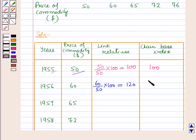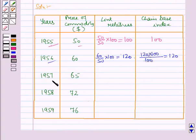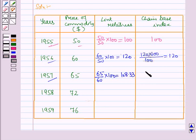The chain-based index for 1956 equals the link relative of the current year (120) multiplied by the chain index of the previous year (100), all divided by 100, which equals 120. For 1957, the link relative equals 65 over 60 into 100, which equals 108.33, and the chain-based index equals 108.33 × 120 / 100, which equals 129.996.